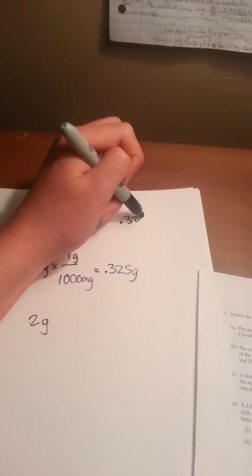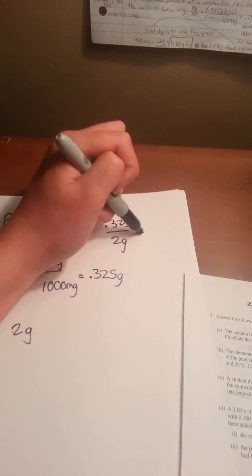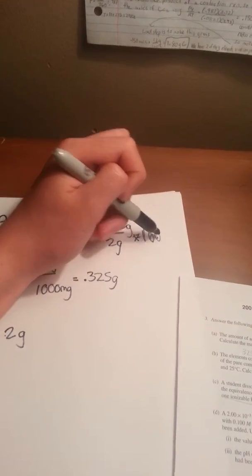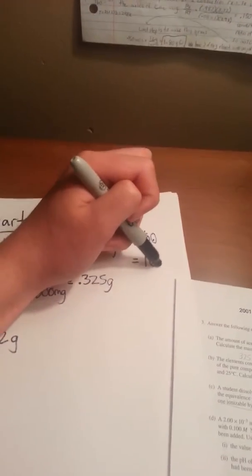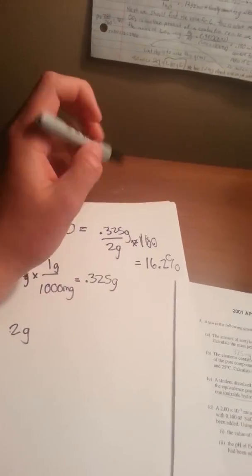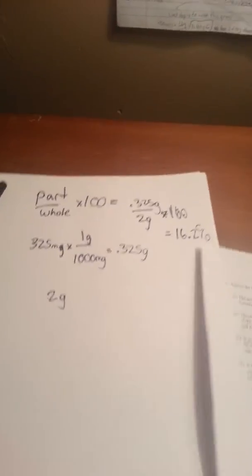The whole tablet is 2 g, so we're just going to do 0.325 g over 2 g, which equals 0.162. Times that by 100, and that's going to be 16.2%. This is how much acid is in each tablet, percent-wise. That's part A, pretty simple.